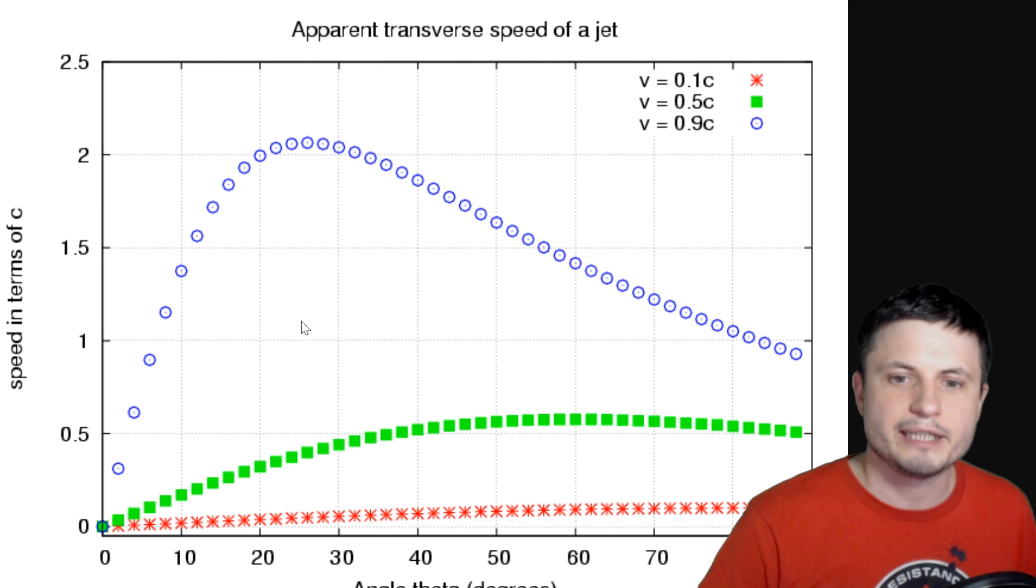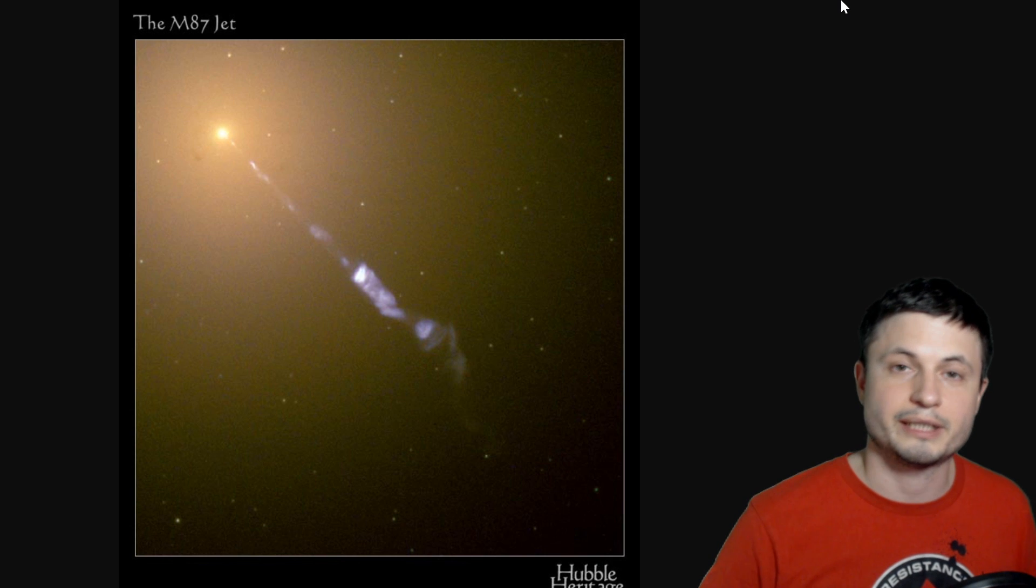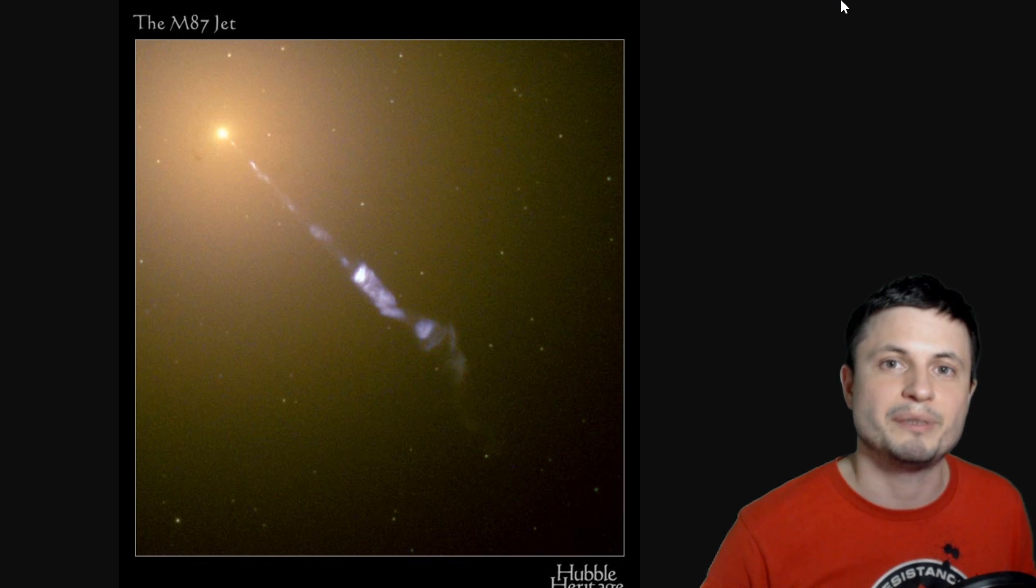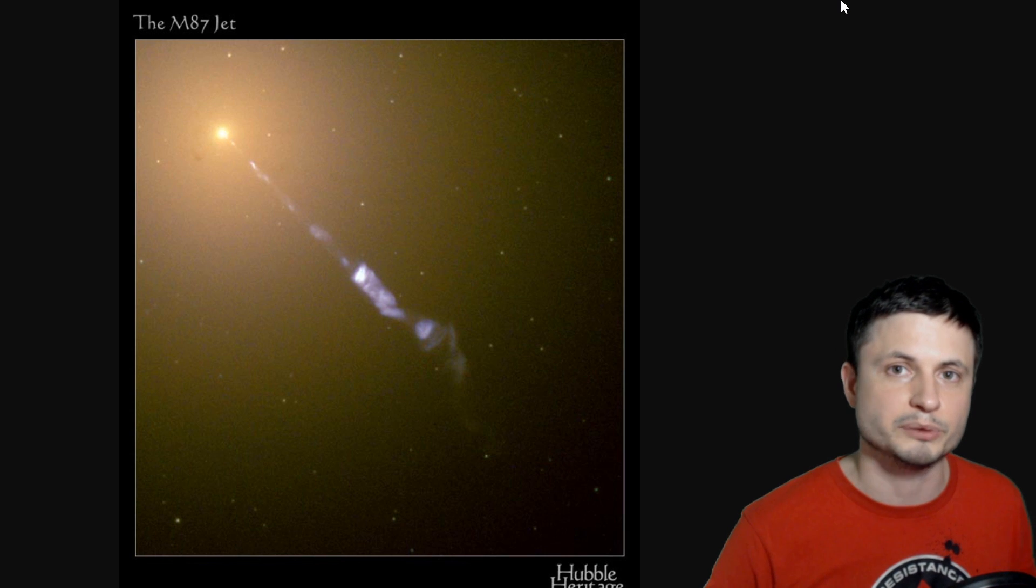So basically, if the angle is about 25 degrees or so, and the jet speed is about 90% of the speed of light, we'll see something that appears to be moving at about 2 or even 2.1 speed of light. And even though this sounds like a lot, it actually is even more for the super famous M87 galaxy and the black hole in the middle.